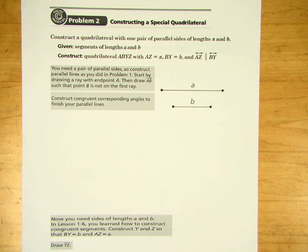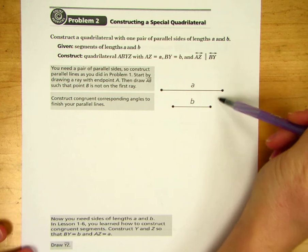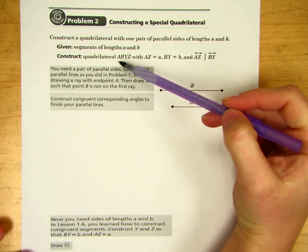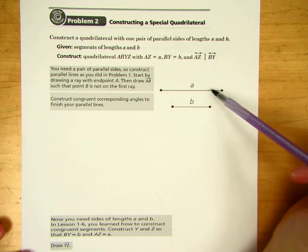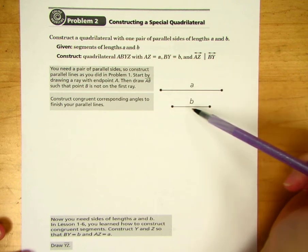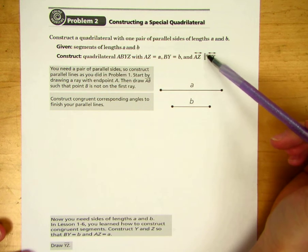For problem 2, we will be constructing a special quadrilateral. Construct a quadrilateral with one pair of parallel sides of lengths A and B. You are given segments of lengths A and B, which are here and here. You need to construct quadrilateral ABYZ with AZ equaling the length of A, BY equaling the length of B, and AZ parallel to BY.